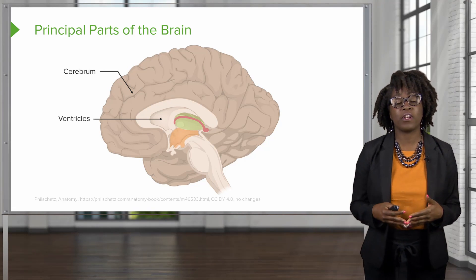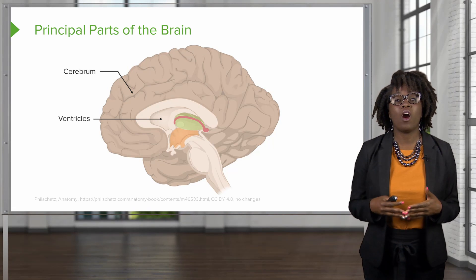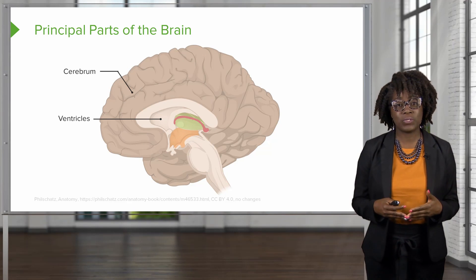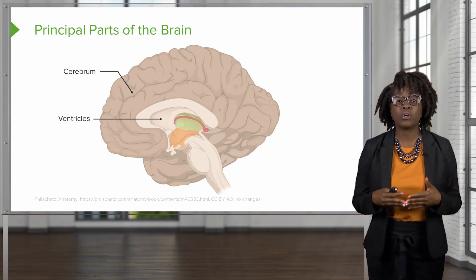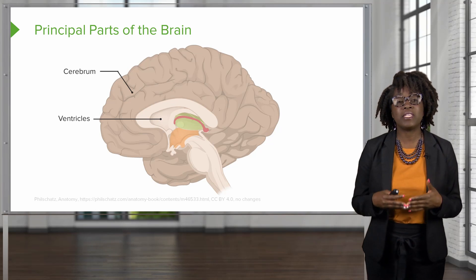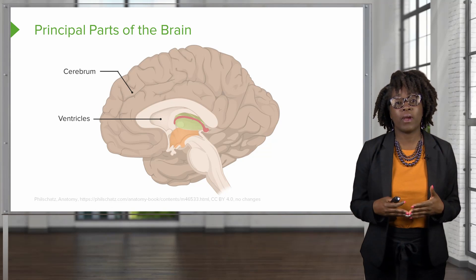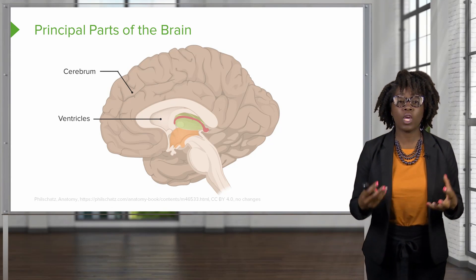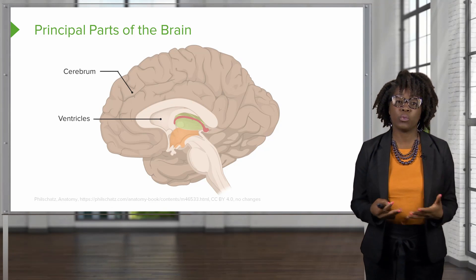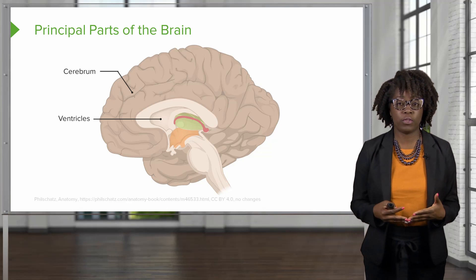The innermost part of the brain are the ventricles. The ventricles are empty cavities inside of the brain that hold the cerebrospinal fluid.